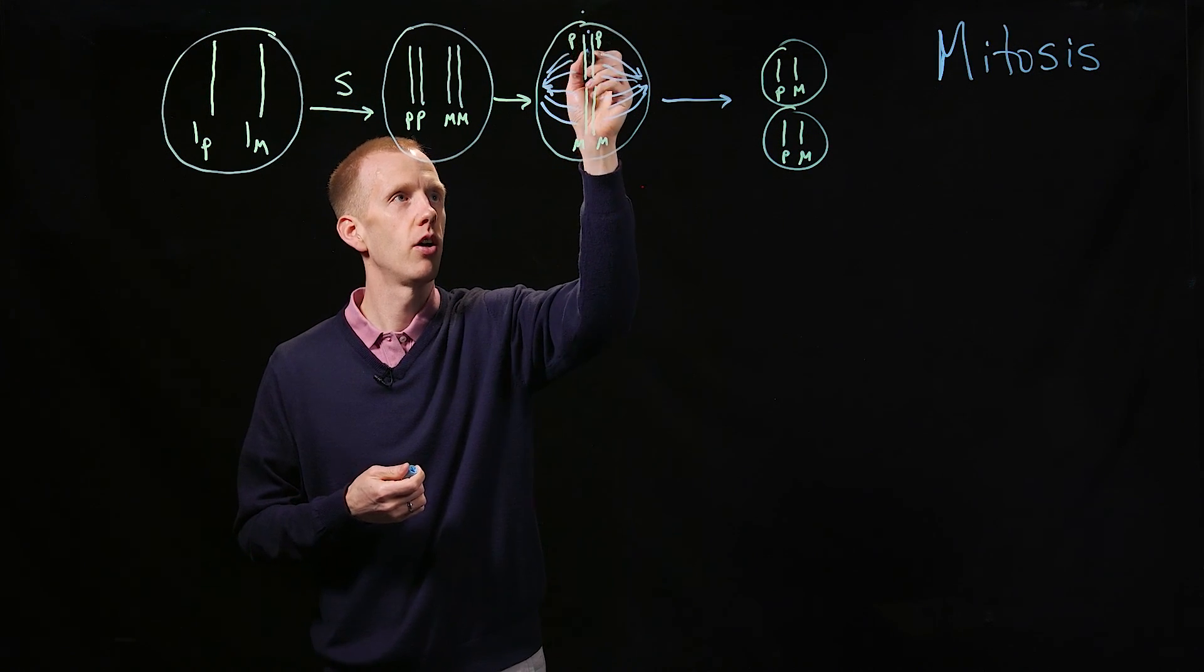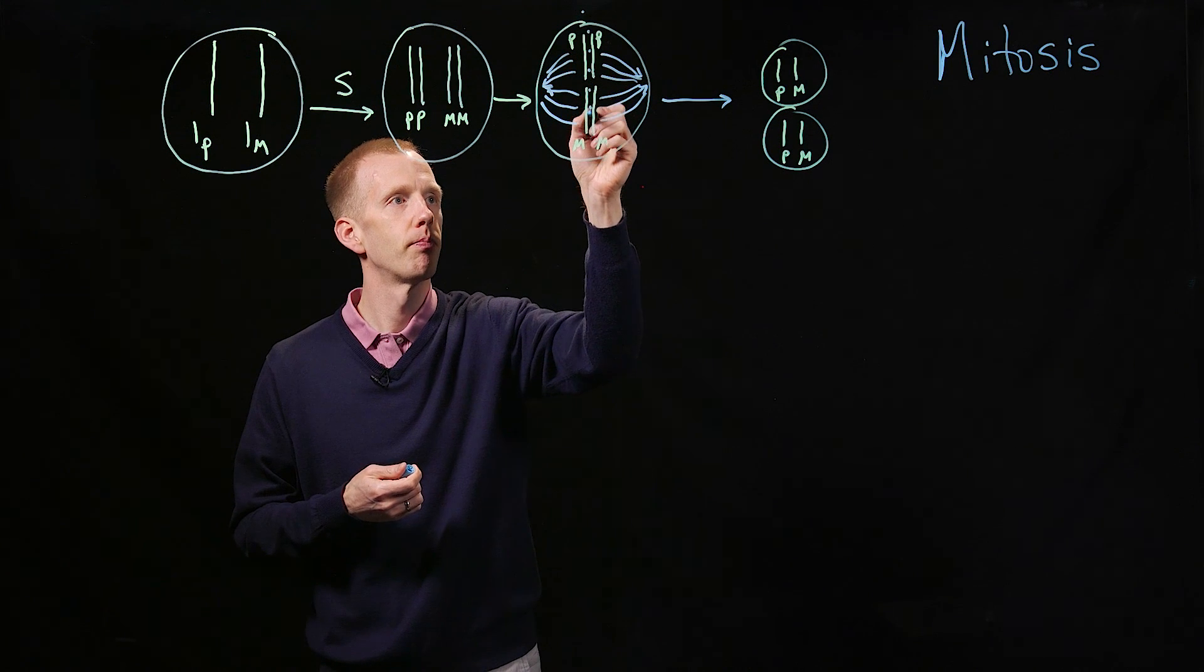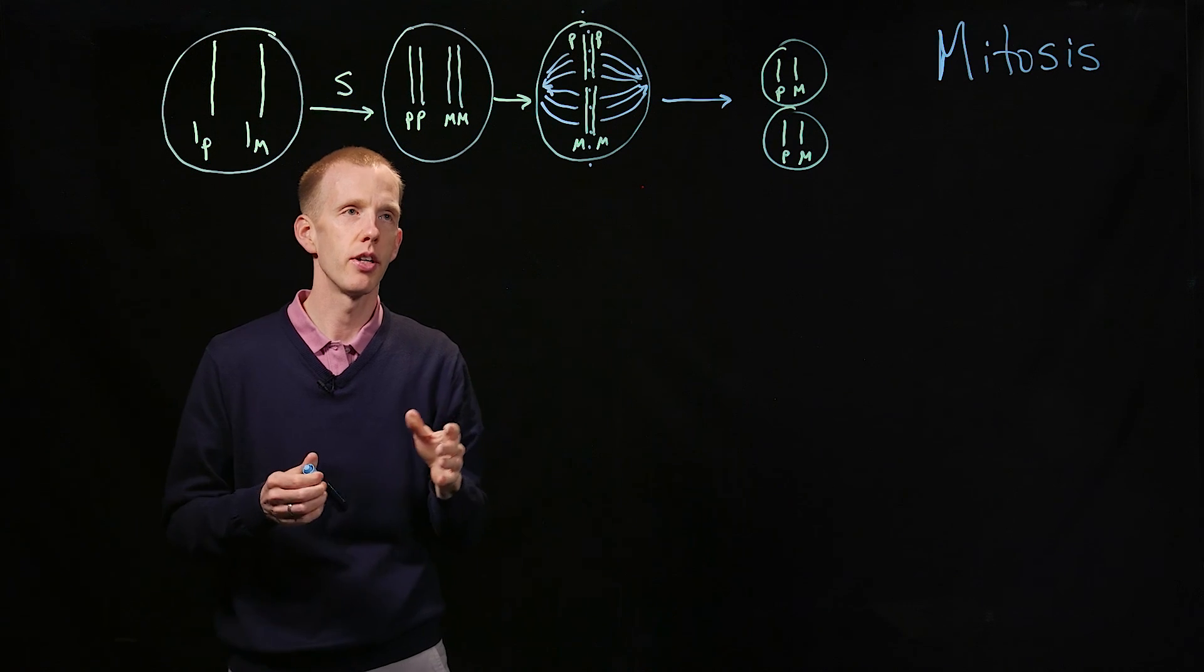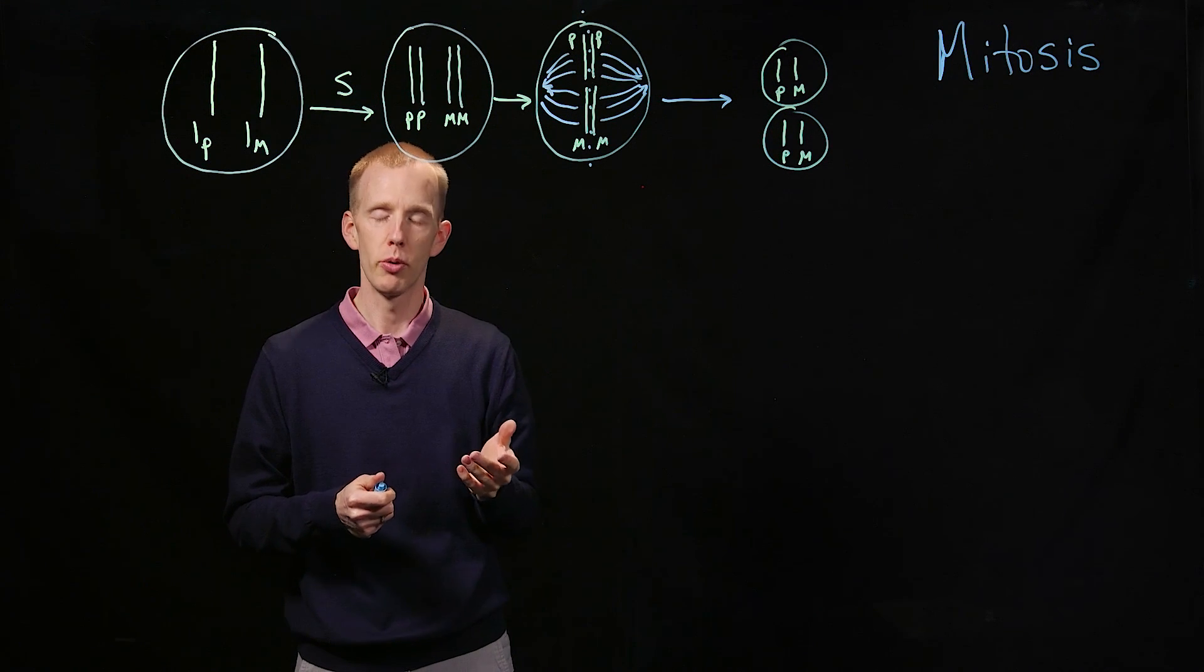So the cell is going to divide right down the middle, here. So that's the process of mitosis just looking at a single chromosome.